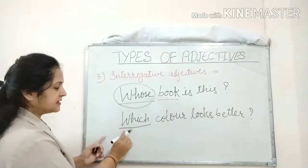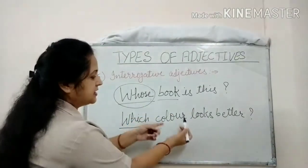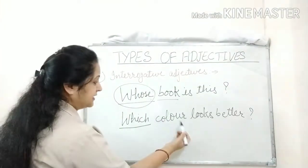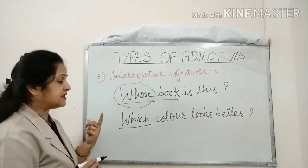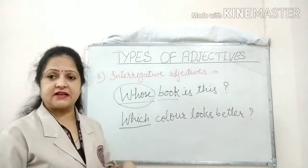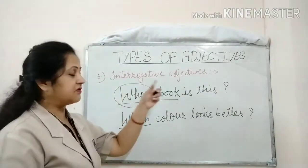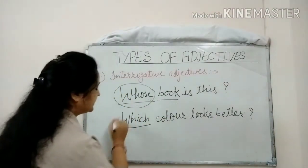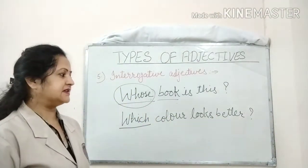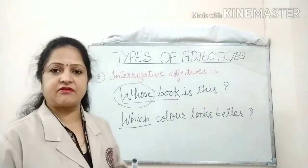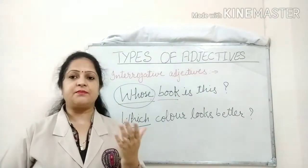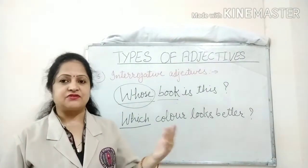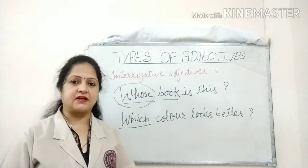'Which' is followed by the noun 'color'. Because it is followed by a noun, 'which' is now functioning as an interrogative adjective in place of an interrogative pronoun. So, 'which color looks better?' — here 'which' is functioning as an interrogative adjective. I think interrogative adjectives are clear to everybody. The interrogative pronouns, when followed by a noun, function as interrogative adjectives.